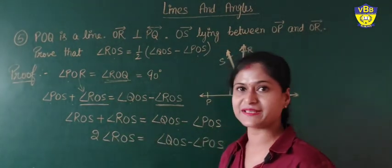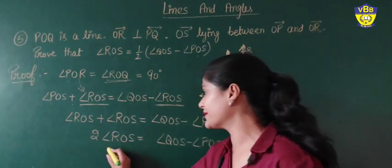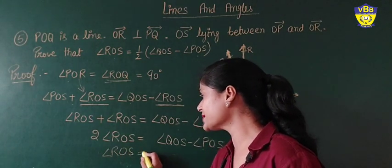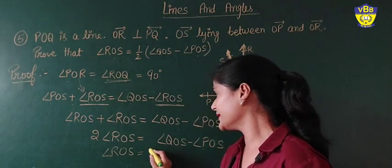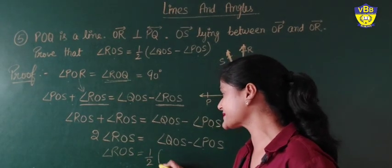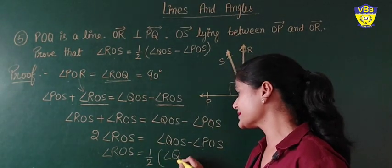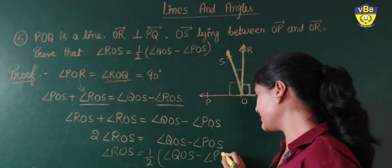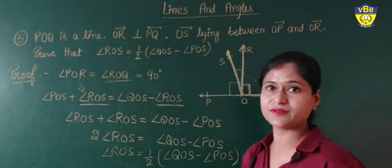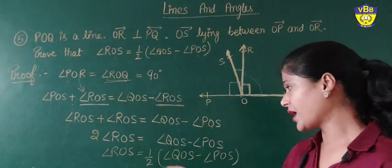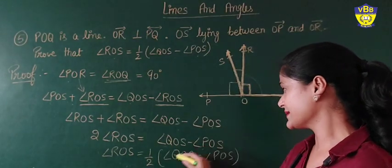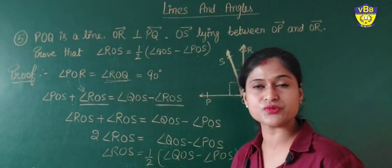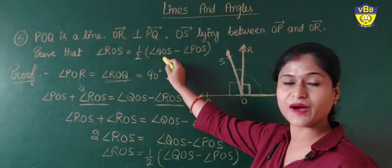Now dividing both sides by 2, angle ROS is equal to half of angle QOS minus angle POS. The subtraction of these angles divided by 2. This is our proof.